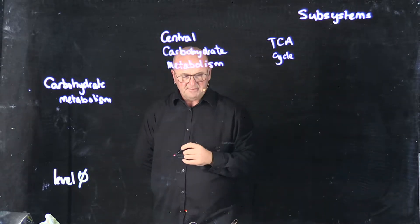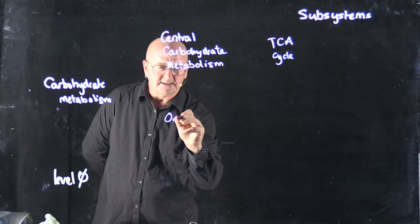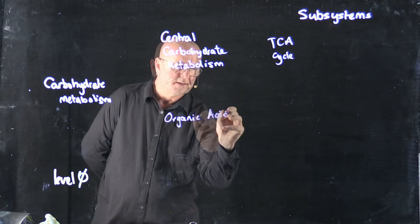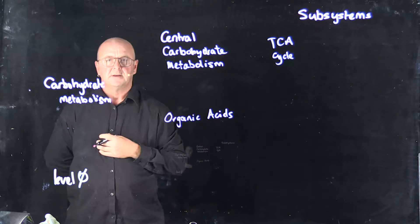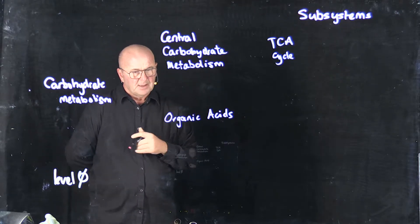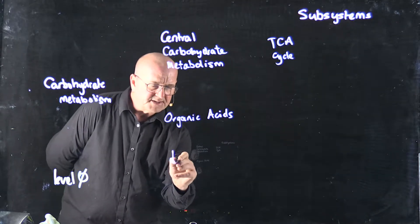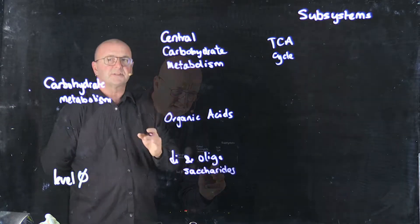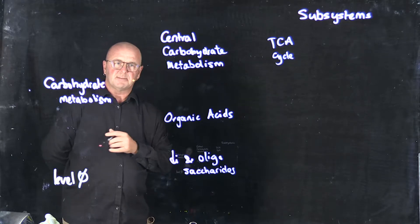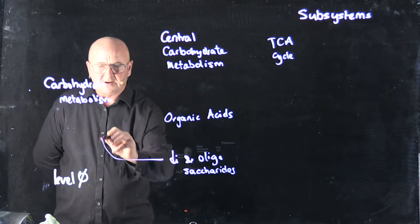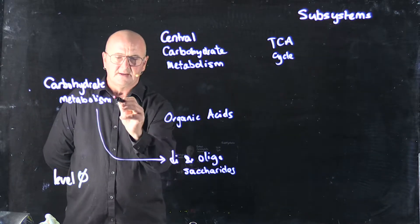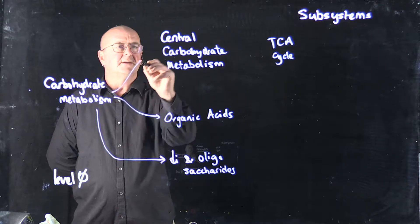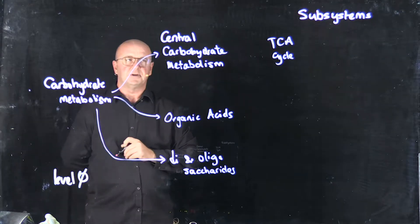We might also have organic acids, because they fall under carbohydrates, and we might also have the di- and oligosaccharides, also falling under carbohydrate metabolism. So in our hierarchy, each of these is related to carbohydrate metabolism.